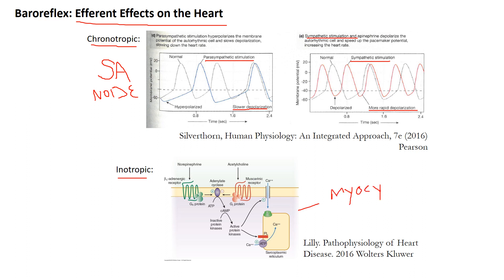They affect contractility by affecting calcium handling in the cardiomyocyte. Beta-stimulation increases protein kinase A, or PKA, activity. PKA phosphorylates phospholamban, and the phosphorylation of phospholamban takes away its inhibition of SERCA. That leads to a bigger calcium transient, faster calcium decrease in diastole, and higher calcium peaks in systole. That's all a review from the electrophysiology and calcium handling video.